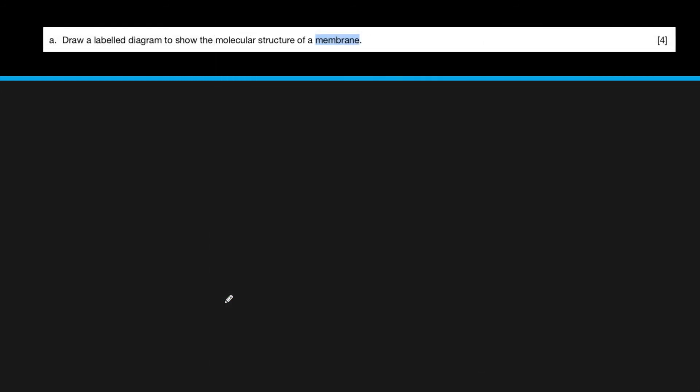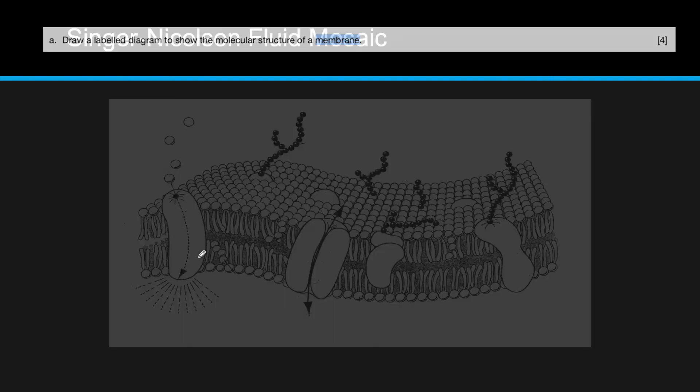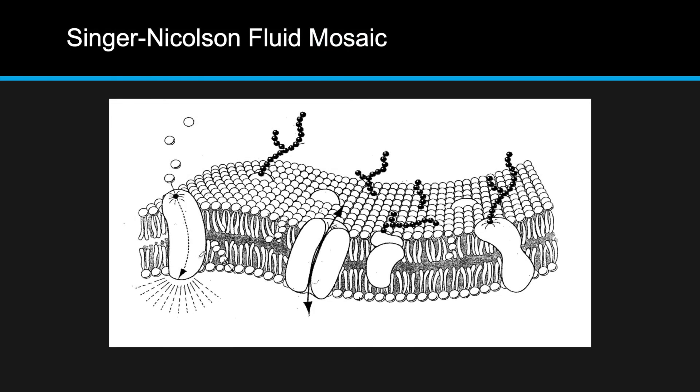These are some examples of free response questions. Draw a labeled diagram to show molecular structure of a membrane. I'm not going to draw the whole thing, but you want to end up with the Singer-Nicolson fluid mosaic model, with two phospholipid layers. Make sure to include cholesterol, at least one integral protein, one peripheral protein, and one glycoprotein. This is a better example of a peripheral protein that's not necessarily a glycoprotein.